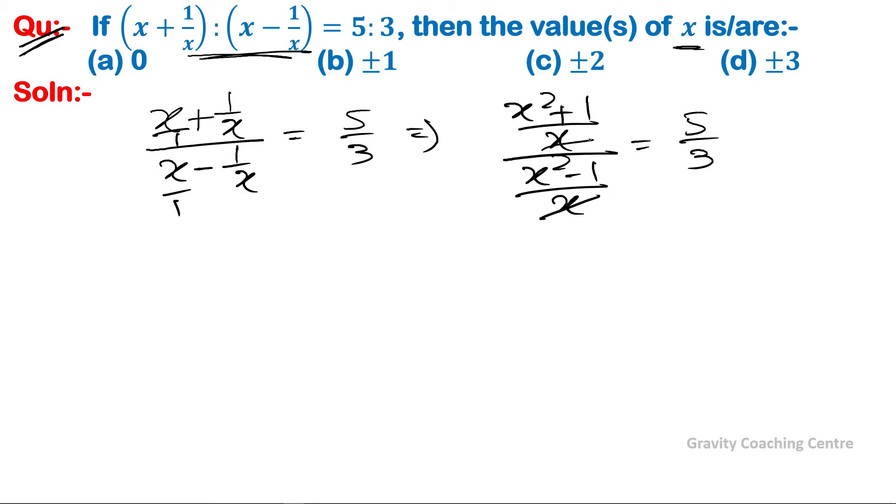So here x cancels, so it implies that (x² + 1)/(x² - 1) = 5/3. And now we use componendo and dividendo.